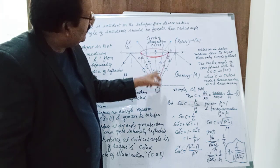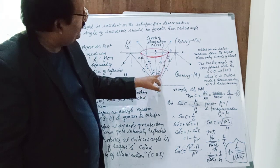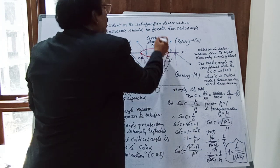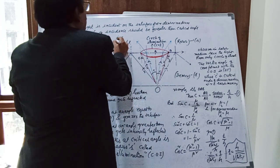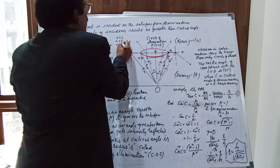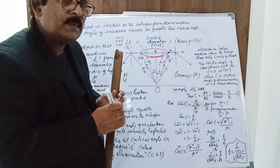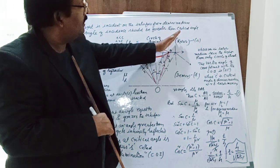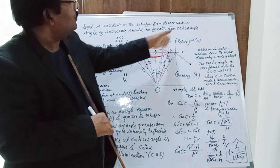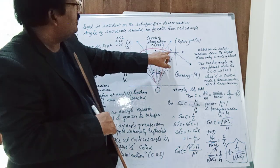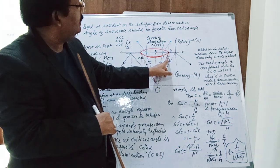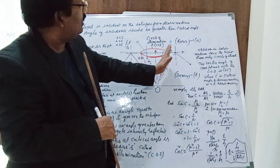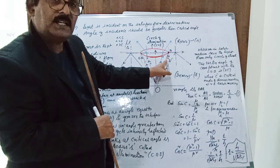If the angle of incidence is increased further, we consider three cases. First, angle of incidence i is less than the critical angle. Second, i is equal to the critical angle — here the ray grazes the surface, because the angle of refraction is 90 degrees and the corresponding angle of incidence in the denser medium is called the critical angle.